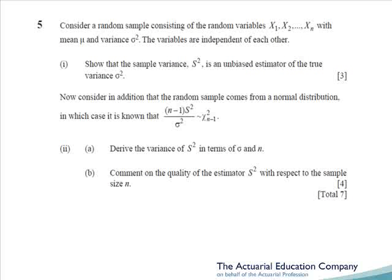Question five is a bookwork question on chapter 9, requiring us to regurgitate the proofs. In part one, we need to show that the sample variance s-squared is an unbiased estimator, i.e. proving that E of s-squared equals sigma-squared. In part two, we need to get the variance of s-squared, given it comes from a normal distribution, using the chi-squared result — finding the expectation of both sides and rearranging. The question finishes with a comment on how the estimator changes with sample size n. Your expression for variance will decrease as sample size increases, meaning it becomes more accurate.